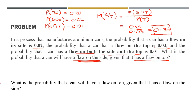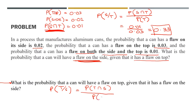Now let's answer the second question: what is the probability that a can will have a flaw on top given that it has a flaw on the side? We have P(T∩S) — that is the same common data between the side and the top — divided by P(S). That gives us 0.01 divided by 0.02, which is basically equivalent to 0.5. So this is our probability that it has a flaw on the top given that it has a flaw on the side.